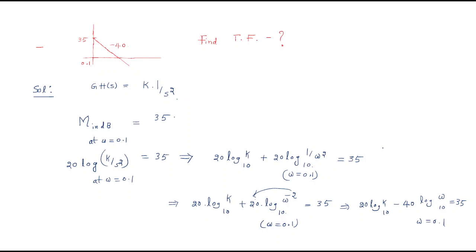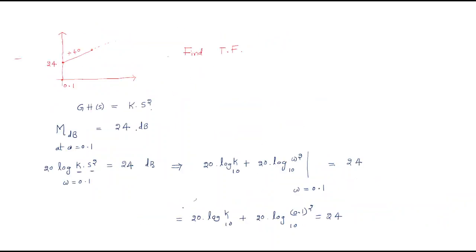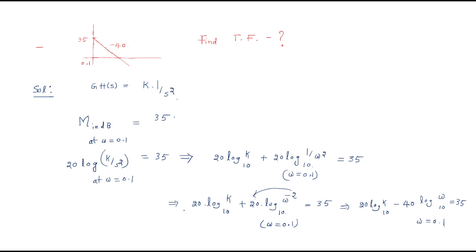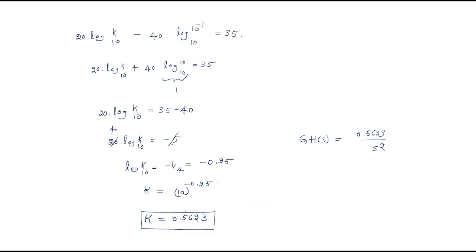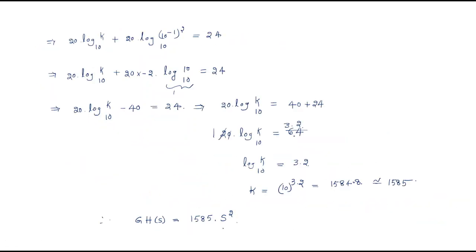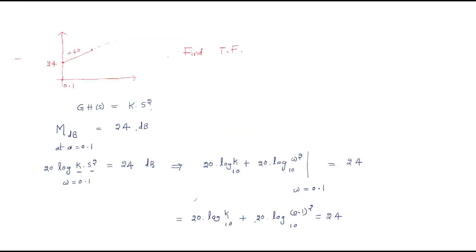So these are two different models. If two poles are given at the origin, we use K/s². If two zeros are given at the origin, we use K·s². This is the complete procedure. I hope all of you understand these two problems. Thank you.